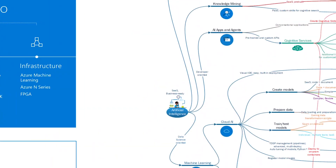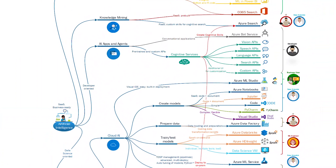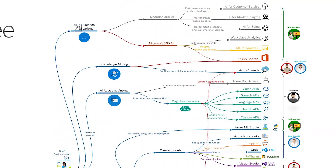Let's zoom into the decision tree and see the general grouping. At the bottom we have artificial intelligence and business applications. Here we have Dynamics 365 AI, which means there are a few solution packages included in Dynamics that already contain AI capabilities for customer service, market insights, and sales.